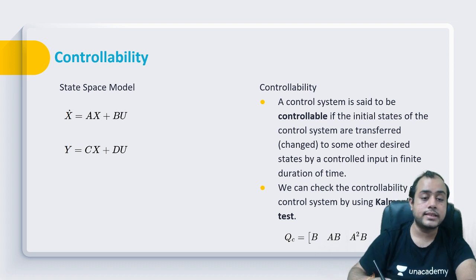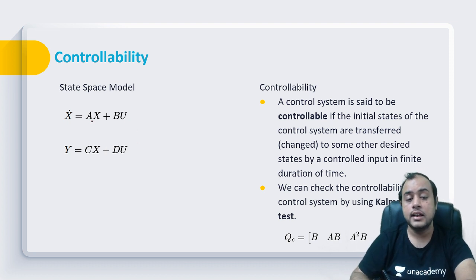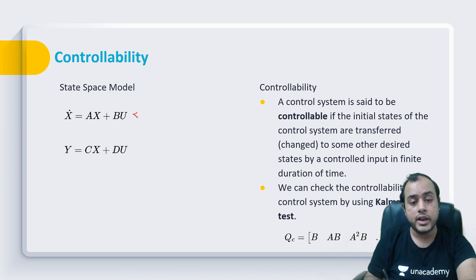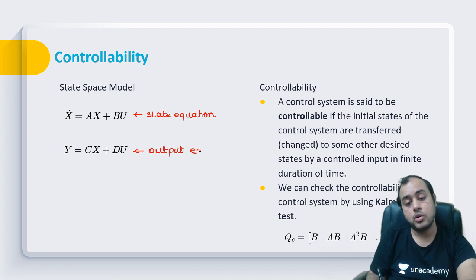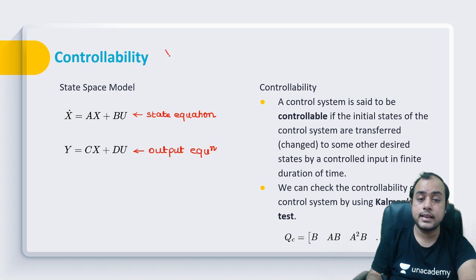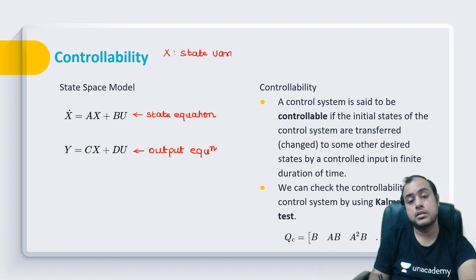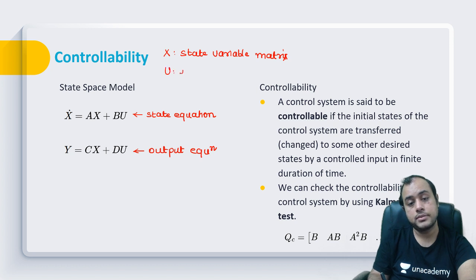If that can happen, the system will be called controllable. This is a general state space model with two equations: the first is called the state equation, and the second — y = Cx + Du — is called the output equation. Here x is the state variable matrix, u is the input, and y is the output.